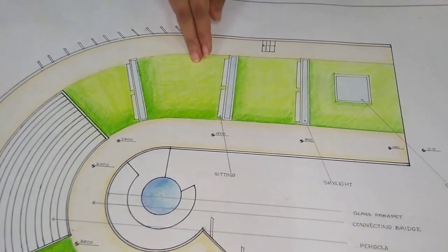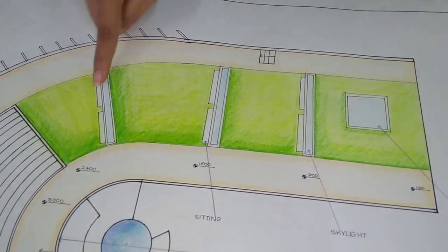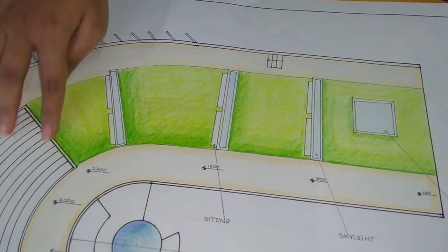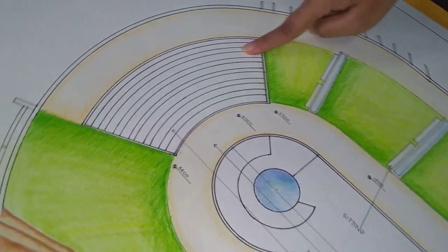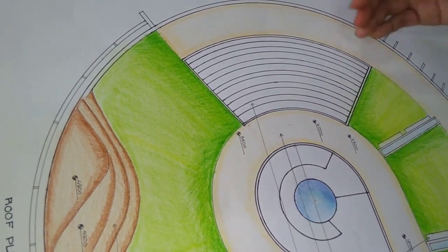As this remains cool, the interior will also remain cool. These are the skylights provided. These are the pergolas, which will give different shadows at different times of the day.